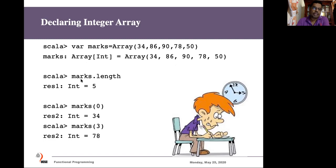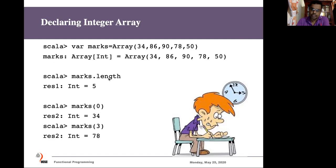After we define an array, there are several predefined methods or functions available. By calling those we can do several operations on the array, and there are also properties available. For example, if we define an array called 'marks', calling 'marks.length' returns the length; 'dot head' returns the first element; 'dot tail' returns all elements except the first; and there are also 'dot first' and 'dot last'.